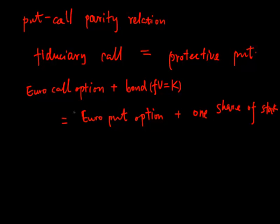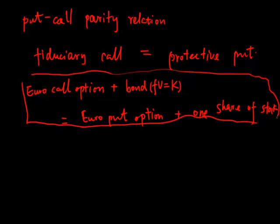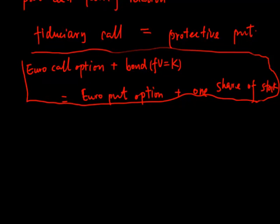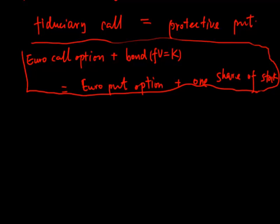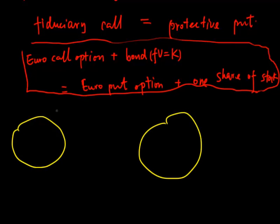So now I'm going to prove this equation. This is a very important equation. Remember, if this relationship were violated, that means there is an arbitrage opportunity. So let's assume there are two portfolios: Portfolio X and Portfolio Y.